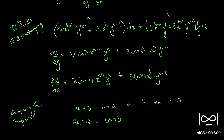Comparing coefficients of x^h·y^(k+3): 3(k+4) = 5(h+1), giving 3k+12 = 5h+5, which simplifies to 5h − 3k − 7 = 0. This is our second equation.